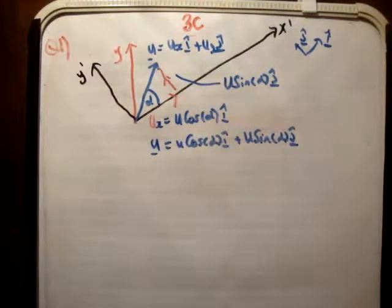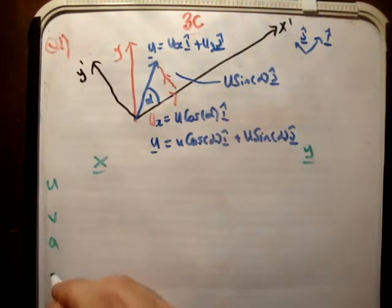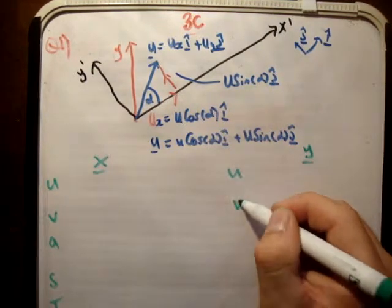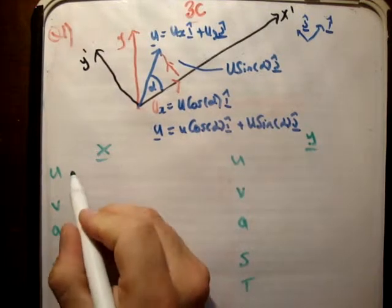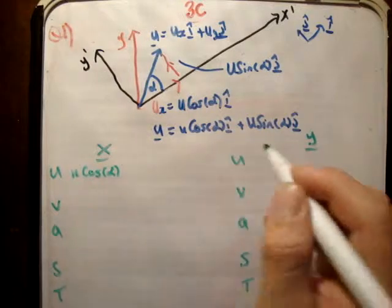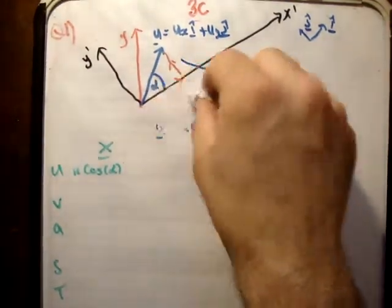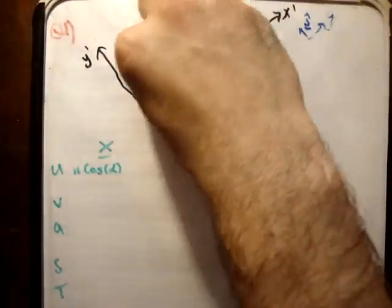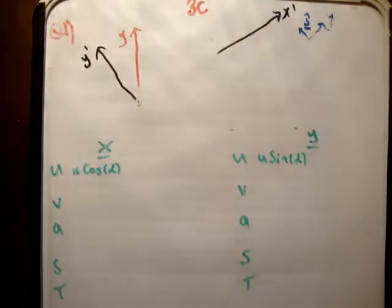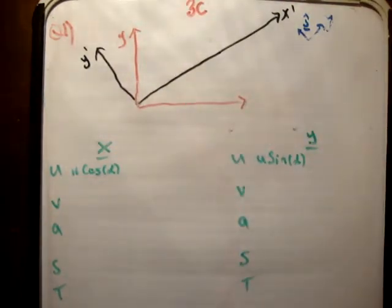That's nothing unusual. So we plug in the values: u sub x equals u cosine alpha, u sub y equals u sine alpha. The next thing we need to do is resolve our gravity vector — this is probably the most difficult part of the question. We have our x axis and y axis in red giving the xy plane, and our x prime y prime axes giving the rotated plane. Gravity acts in the negative y direction.